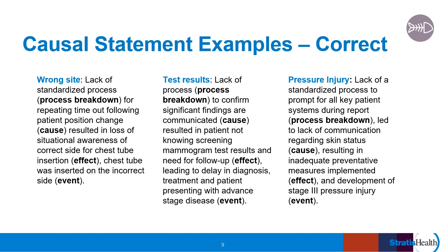For example, the first causal statement for a wrong site surgery event reads: 'Lack of a standardized process for repeating a timeout following a patient position change resulted in loss of situational awareness of the correct side for chest tube insertion, and the chest tube was inserted on the incorrect side.' The team identified where the breakdown occurred — they did not have a process to repeat a timeout if there was a change in the patient's position since the initial timeout. In the test results example, there was a process breakdown in that there was a lack of a process in place to confirm significant findings were communicated. This can result in patients not knowing about a need for follow-up and result in a delay in diagnosis and treatment with detrimental effects.